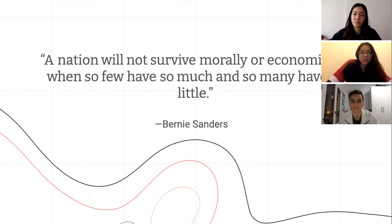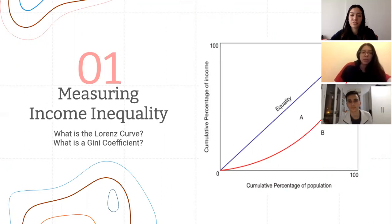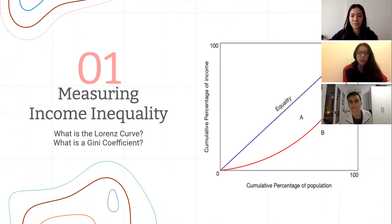When measuring income inequality, we need to understand two key concepts, which are the Lorenz curve and the Gini coefficient. The Lorenz curve is a graphical representation that illustrates the degree of inequality of income distribution in an economy compared to the line of absolute equality — that is the line we see in blue. The equitable distribution of equality is shown by a 45-degree line on the diagram.